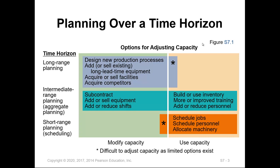In some cases, you might need to reduce capacity, which can be done through reducing shifts and reducing personnel. For short-range capacity planning to meet customer demand, we can schedule jobs, personnel, and allocate machinery to meet the required capacity — meaning whatever you have on hand, you utilize it to meet demand. You will not be subcontracting or building or adding any new facilities.